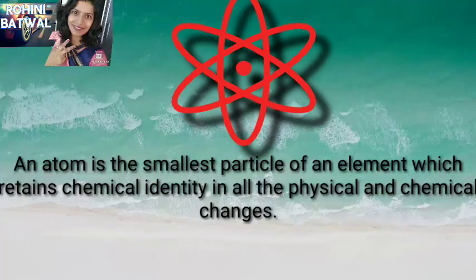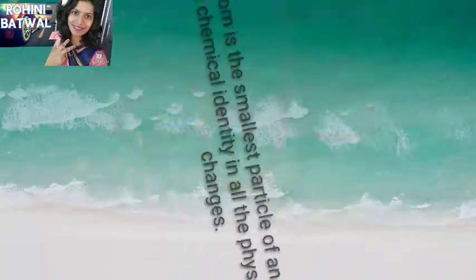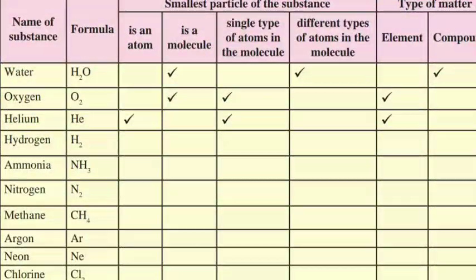Now see students, table 5.1 is given in front of you. We will complete the table by putting tick marks in the appropriate boxes. See students, three examples are already solved. We will just go through it. Water is a molecule with different types of atoms in the molecule and it is a compound. Oxygen is a molecule with a single type of atom in the molecule and it is an element. Helium is an atom, single type of atom in the molecule, and it is an element.